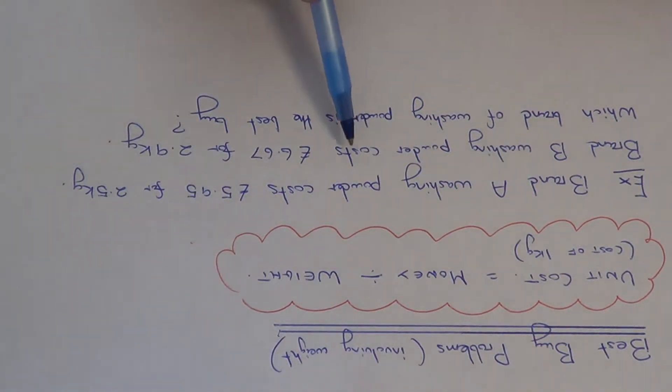So let's go and read out the example first of all. We've got brand A washing powder costs £5.95 for 2.5 kilograms. Brand B washing powder costs £6.67 for 2.9 kilograms.